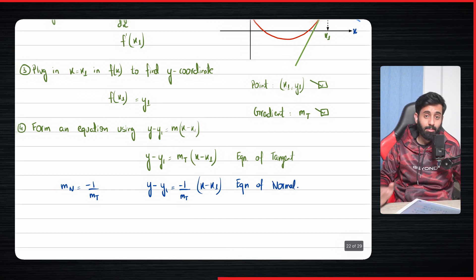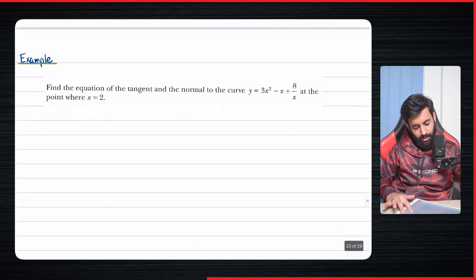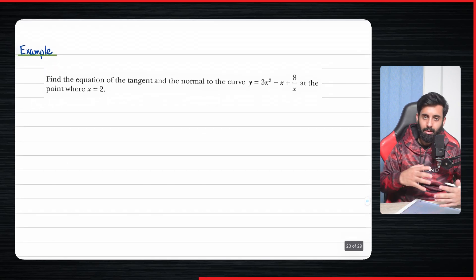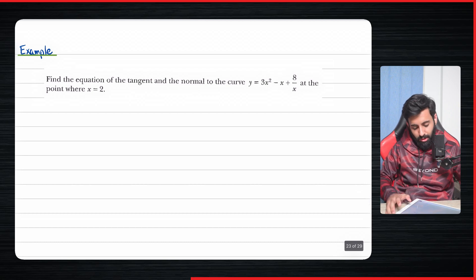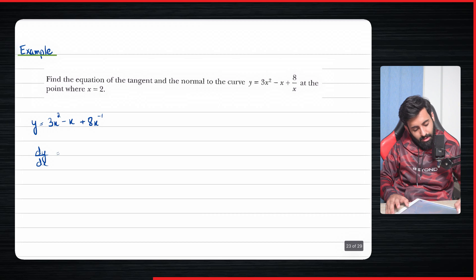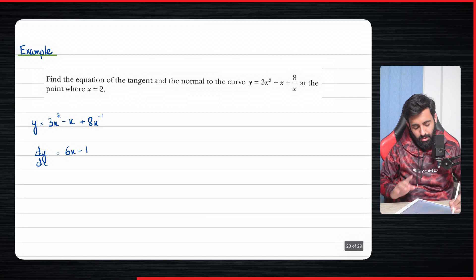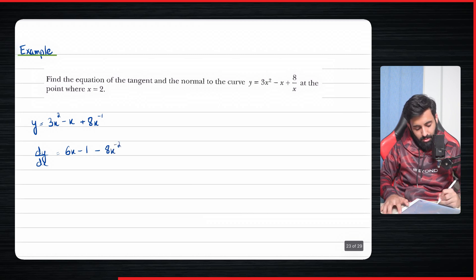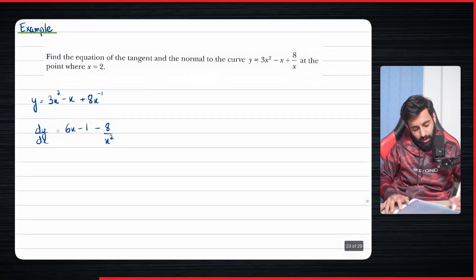Now let's cement the concept with an example. The equation of the curve is y = 3x² − 1 + 8/x. First, rewrite 8/x as 8x⁻¹ to make differentiation ready. Then dy/dx = 6x − 1 − 8x⁻², which I prefer to write as 6x − 1 − 8/x².